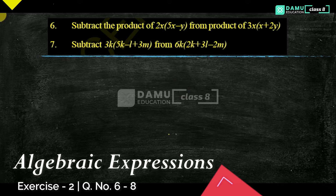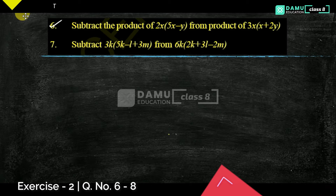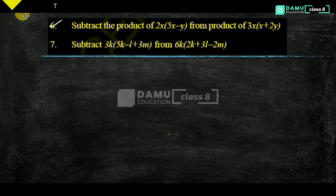In this module, we are going to discuss the sixth question: subtract the product of 2x from the product of 3x into 5x minus y. Remember, 'from' means always subtract from the right side.